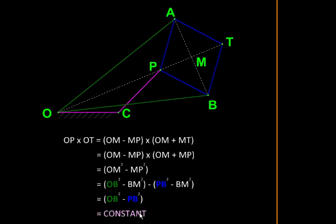This expression reminds us of inversion. Inversion of point P with respect to a circle whose center is at O, and the resulting image is T. So T is inverse of P.